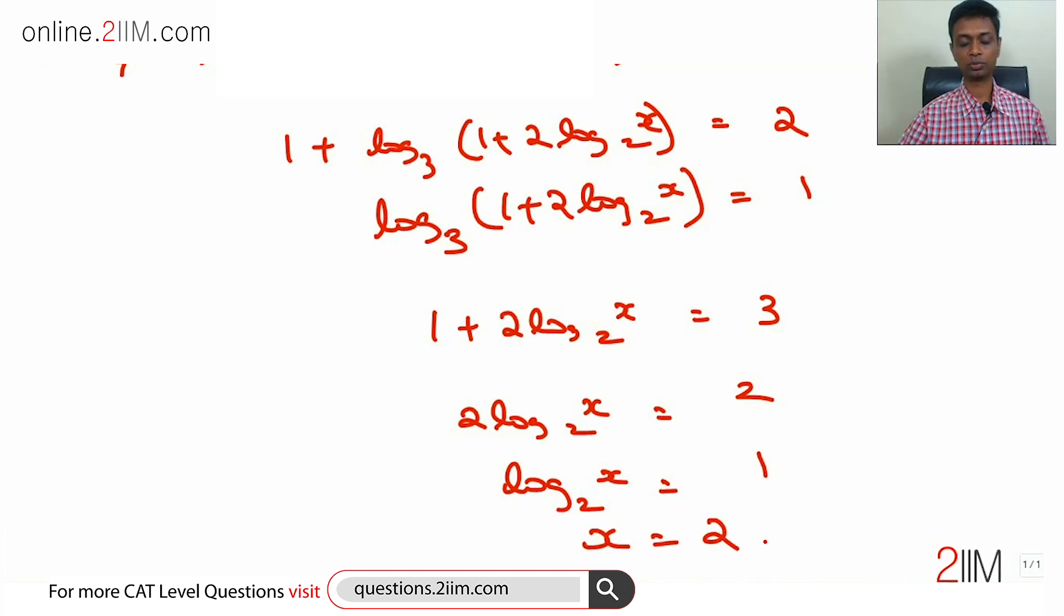x equals 2. Go from the last logarithm thing inwards. Don't try to solve for x from where x is present. Keep simplifying and then finally go down to x.